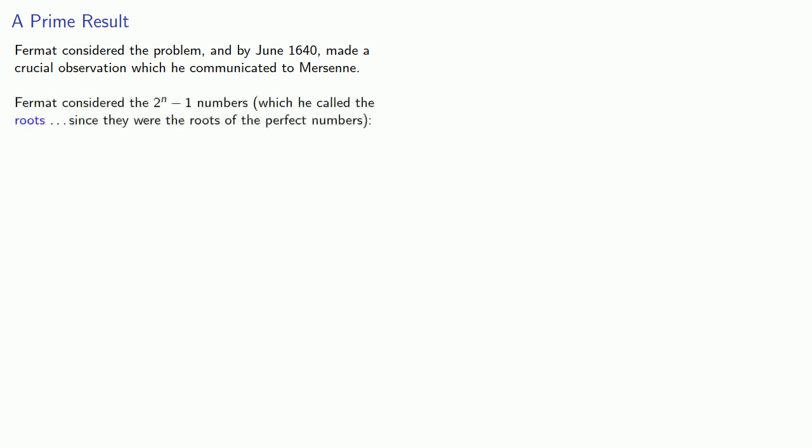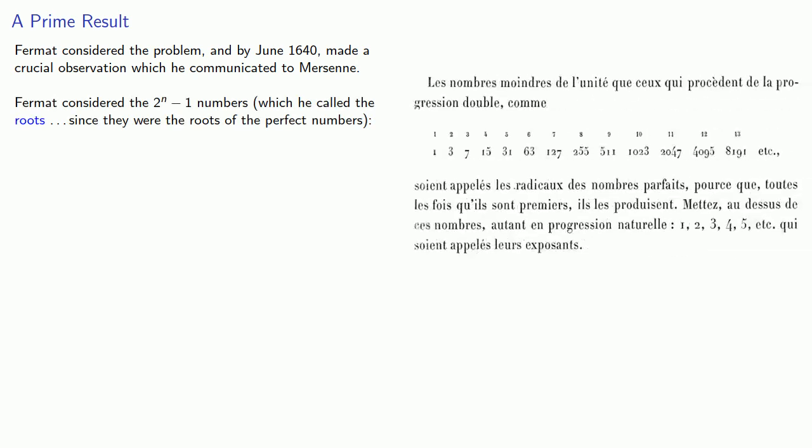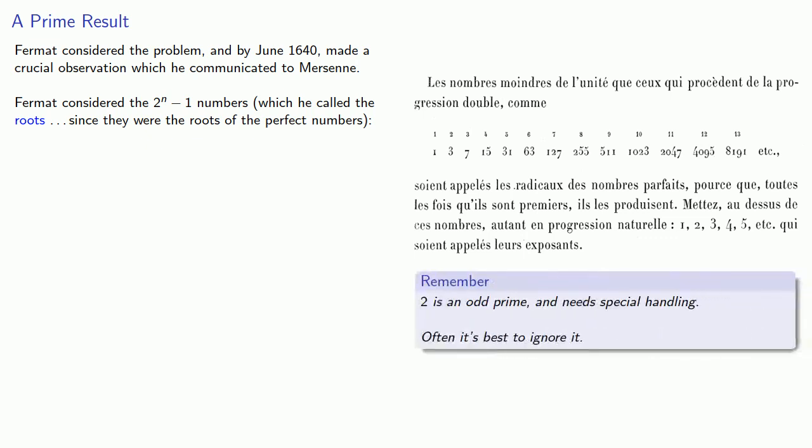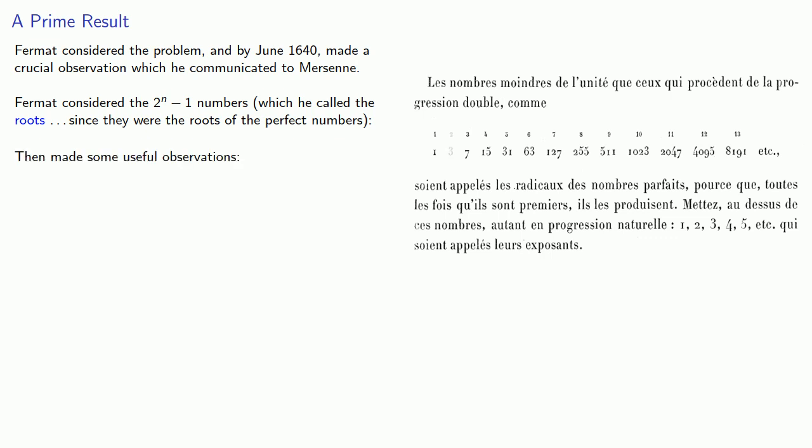Fermat considered the 2^n - 1 numbers, which he called the roots, since they were the roots of the perfect numbers. In other words, once you knew this number, you could create a perfect number. Now, going forward, it's useful to remember that 2 is an odd prime, and it requires some special handling, and often it's best to ignore it. So the first of Fermat's observations is that if the exponent is composite, so is the root.